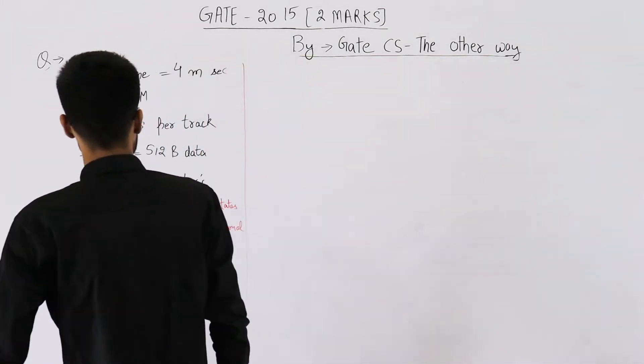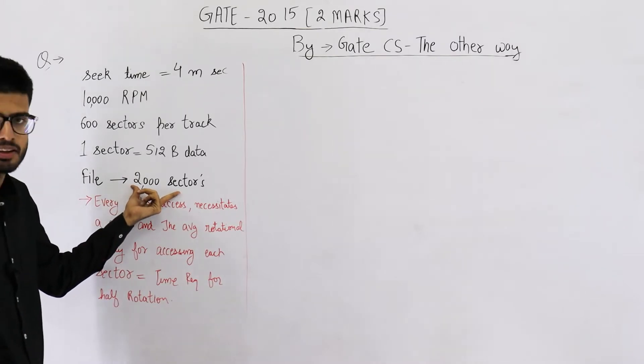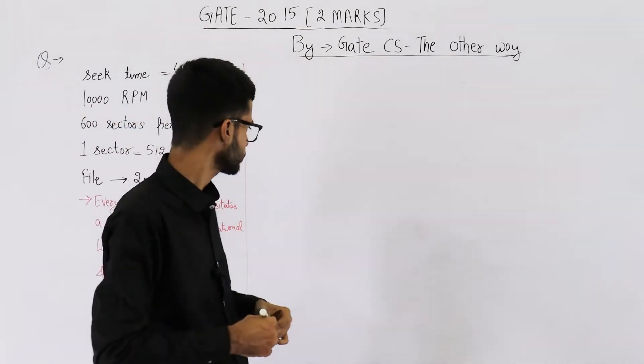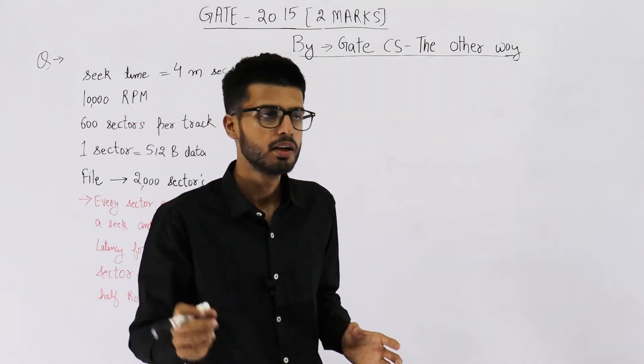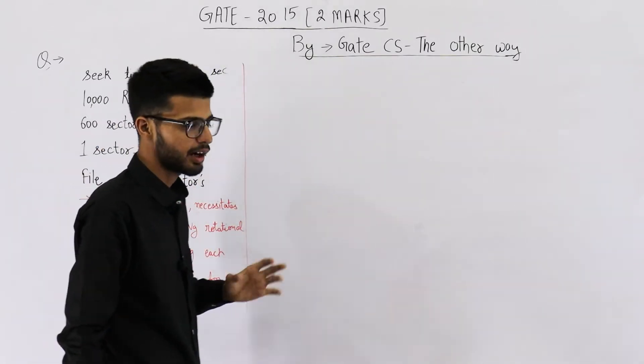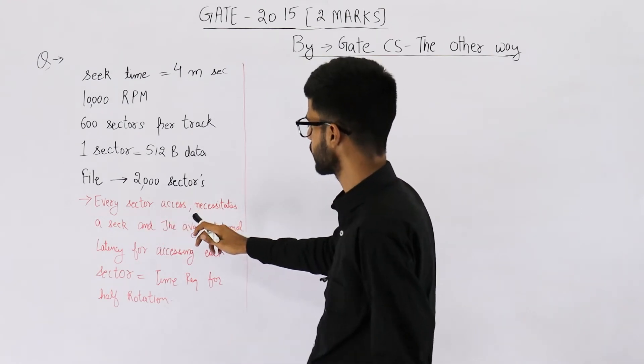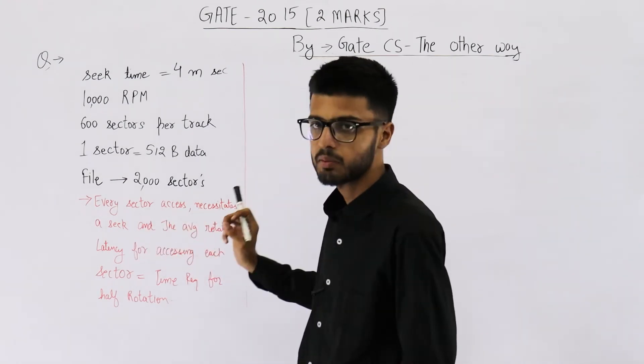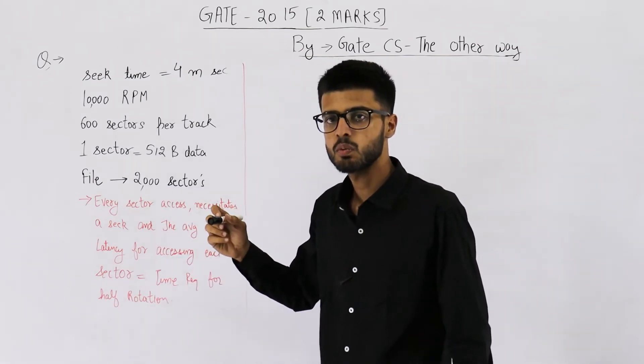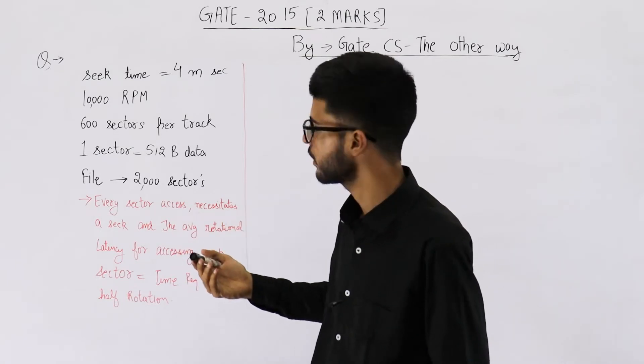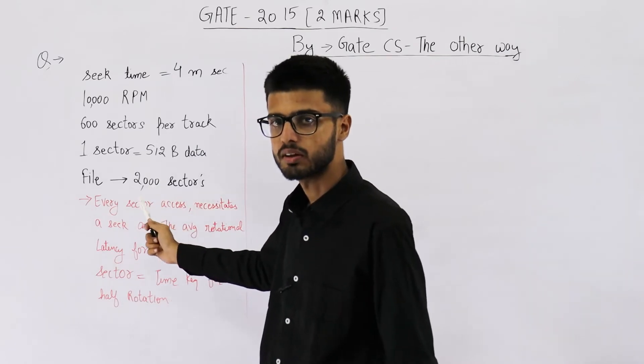We are trying to access a file which spans 2000 sectors in this disk. That means whatever will be the time required for accessing one sector, we'll multiply it by 2000. And one more interesting thing they're saying is every sector access necessitates a seek. That means after accessing each sector, seek time will be counted again and again. You'll multiply the seek time for one sector by 2000.